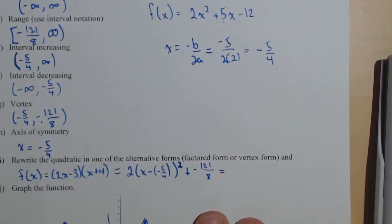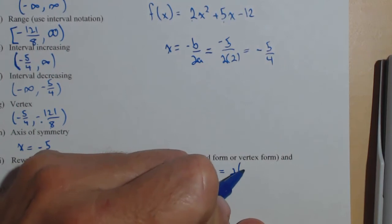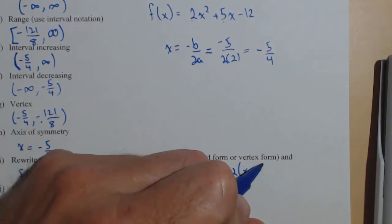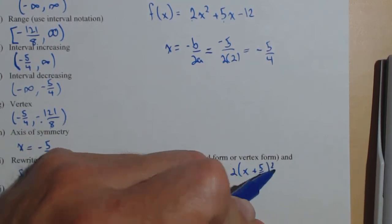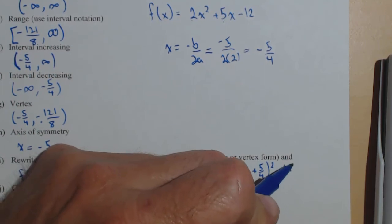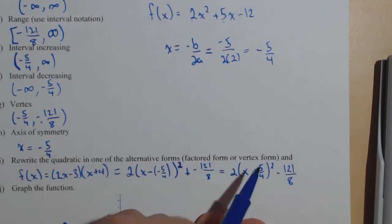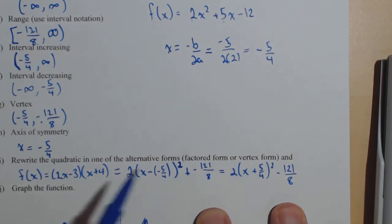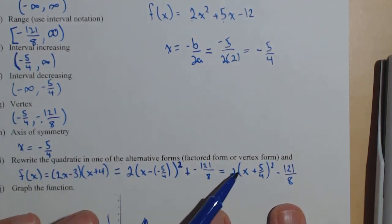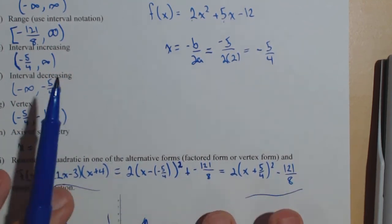And I'm going to take one step of simplification. So 2 times x plus 5 fourths squared minus 121 over 8. Because what it is, is we already have the vertex. So we don't have to go through completing the square on this thing. We can just take the vertex and use it to set up the vertex form. So there's our factored form. There's our vertex form.